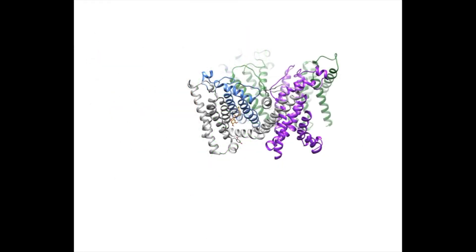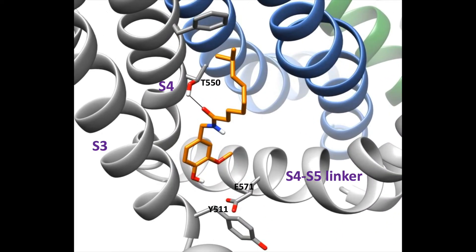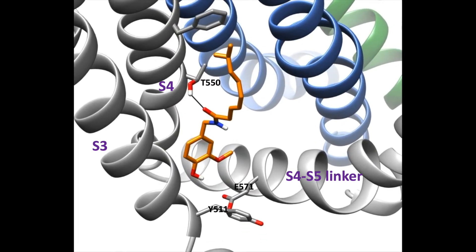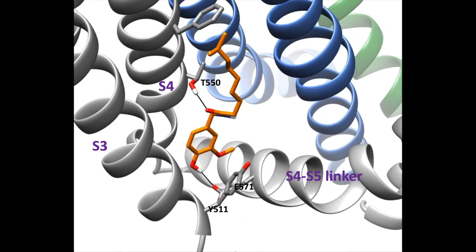The capsaicin binding pocket is formed by the S3, S4, and S4-S5 linker within the membrane. During capsaicin binding, the tail contacts the upper half of helix S4 to form nonspecific Van der Waals interactions. In the absence of capsaicin, the tyrosine 511 on the S3 points away from the binding pocket. When capsaicin enters the binding pocket, the tyrosine 511 rotates to point into the binding pocket as it interacts with the vanillel head, inducing the fit of the capsaicin in the binding pocket.